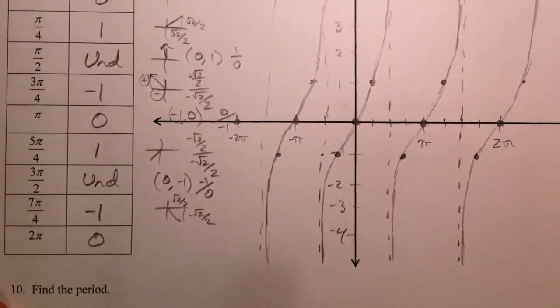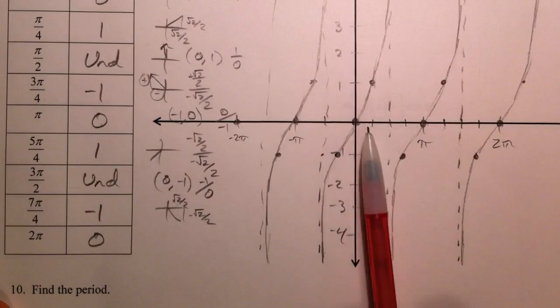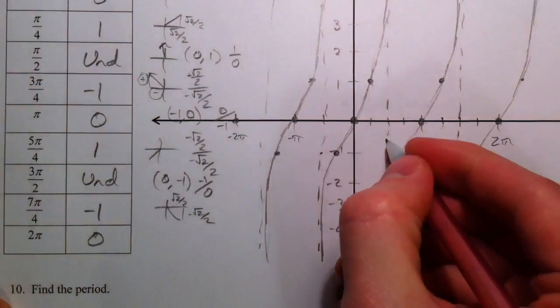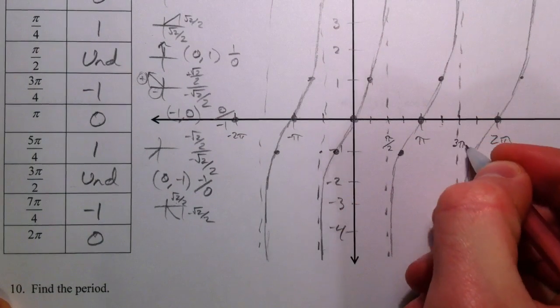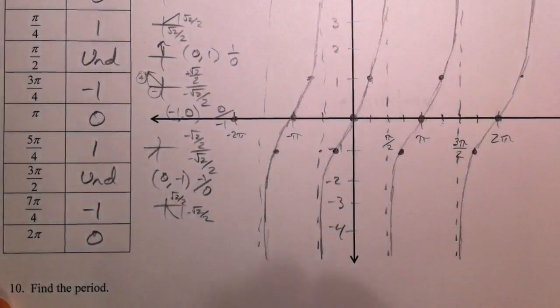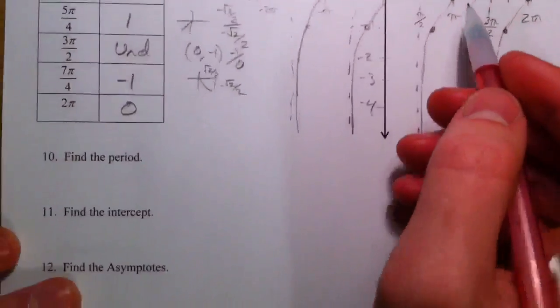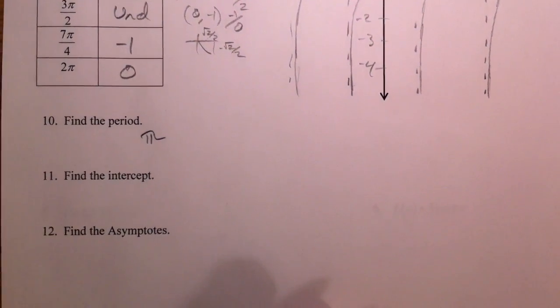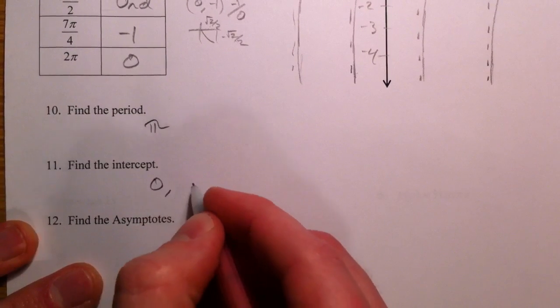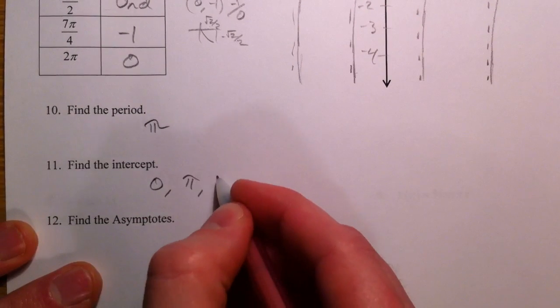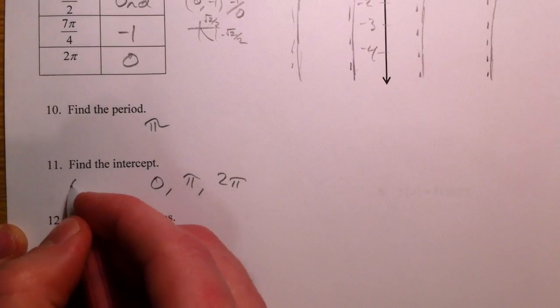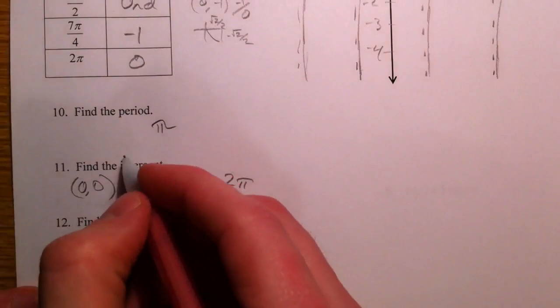Find the period. Well, it goes from here to here before it starts repeating itself. You can think of this as being pi over 2 and this as being 3pi over 2. That's a distance of pi. Period is pi. The intercept is at 0, pi, 2pi. The x-intercept.